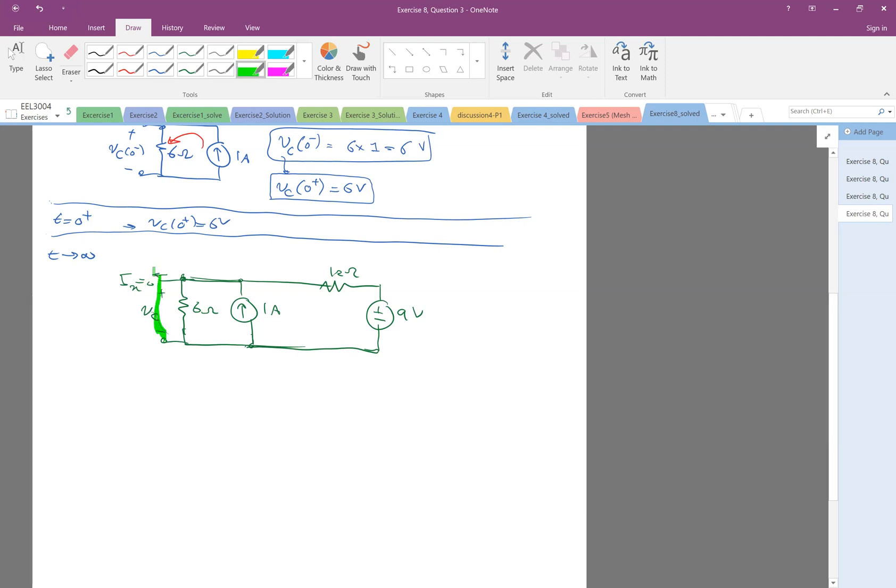What is the V of C at infinity? So let's see, we can do a node analysis. Assume this is zero, and this is V of C. So what we can say is V of C minus zero divided by six, and there's a 1 amp, so minus 1 plus, and this is 9 volts. So this is V of C minus 9 divided by 12, and we equate to zero. So after doing some math, let's multiply everything by 12. We get 2 V of C minus 12 plus V of C minus 9 equal to zero. 3 V of C equal to 21, V of C equal to 7 volts. And don't forget, this is V of C at infinity.